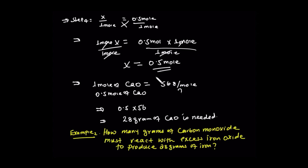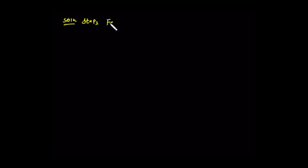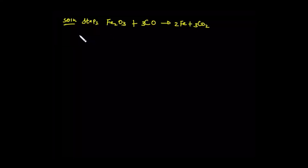As a little additional example: How many grams of carbon monoxide must react with excess iron oxide to produce 28 grams of iron? Step one: Write the balanced chemical equation. Carbon monoxide reacts with iron oxide to give us iron and carbon dioxide. Balance the chemical equation. Step 2.